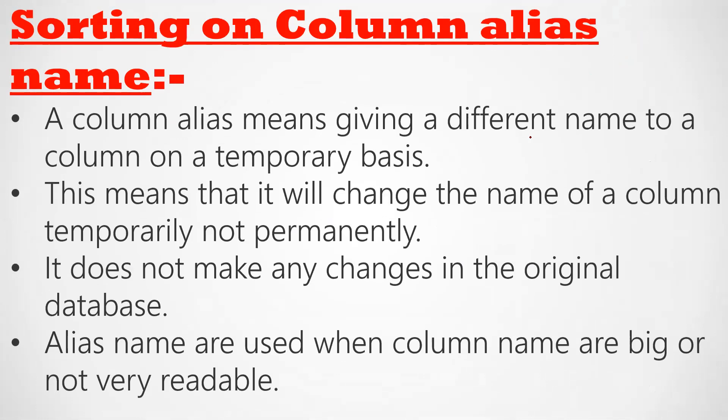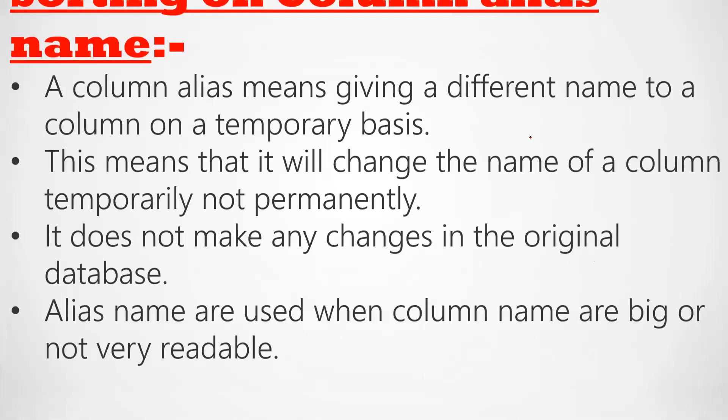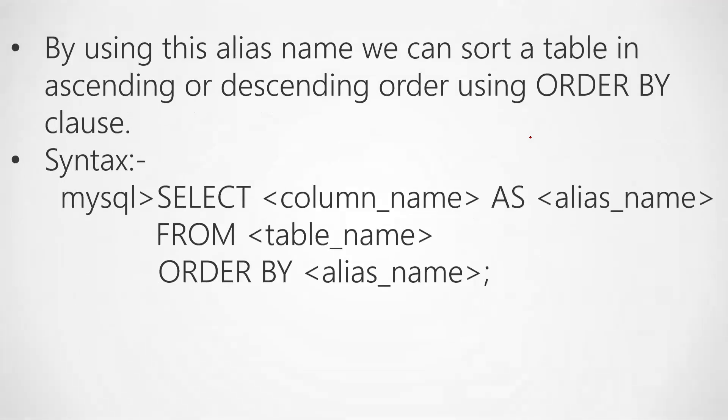So now we've learned what column alias name is — giving any particular column a new temporary name when providing results. The column alias name does not make any changes in the database. Now, the alias name we gave to a column can also be used with the ORDER BY clause to arrange a table in ascending or descending order. That is what we call sorting with column alias name.